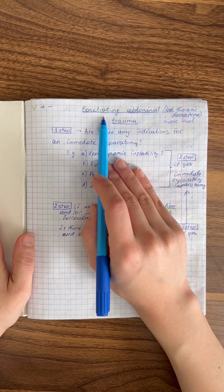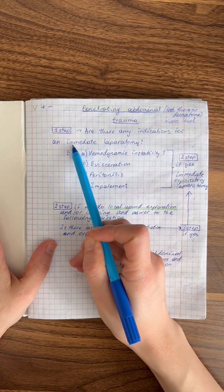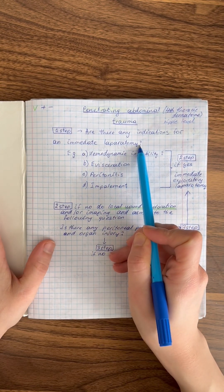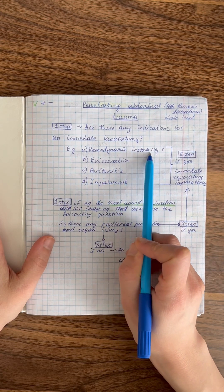The first thing we need to identify is whether there are indications for an immediate laparotomy. What are these indications? For example, when our patient is hemodynamically unstable.